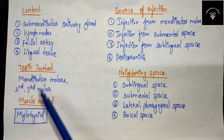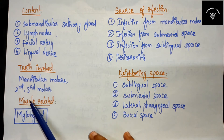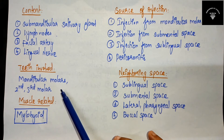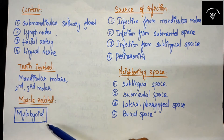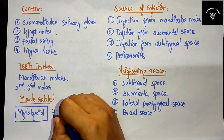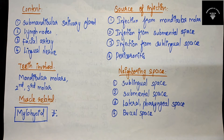What are the teeth involved in submandibular space infection? Mandibular molars — mainly the second and third molar. The important muscle in both the sublingual and submandibular space infection is the mylohyoid. This muscle distinguishes sublingual from submandibular space infection: if the apex of the infected tooth is above the mylohyoid muscle, it is sublingual space infection; if below the mylohyoid, it is submandibular space infection.